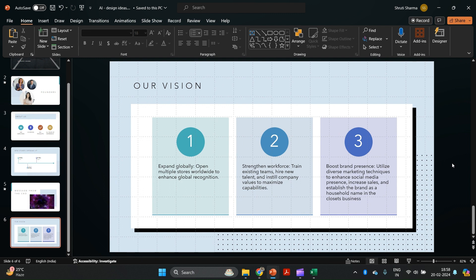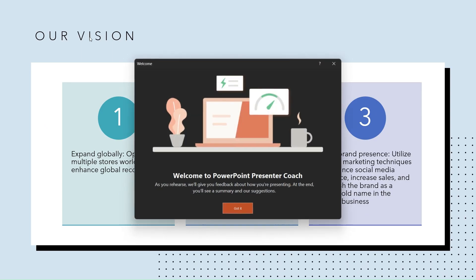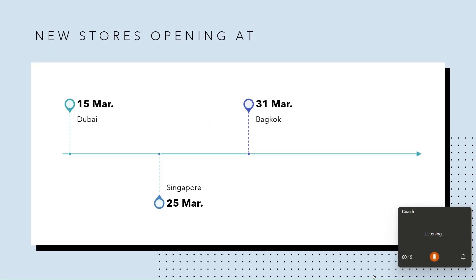What if I tell you that AI can also help you rehearse your presentation and change the way you present? There are two parts to a presentation: one is the content and visuals, but the second part — equally important — is how you present. Let's go to Slideshow and use the option called 'Rehearse with Coach.' The moment you're presenting, it will keep giving you instant feedback — for example, it tells me to avoid filler words and to slow down a little.